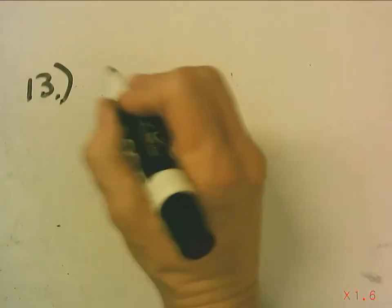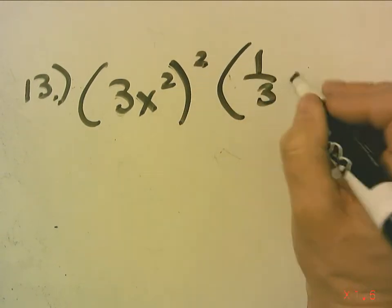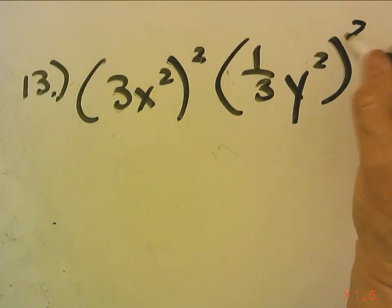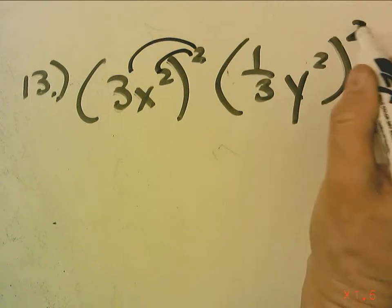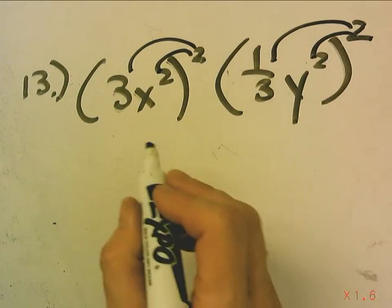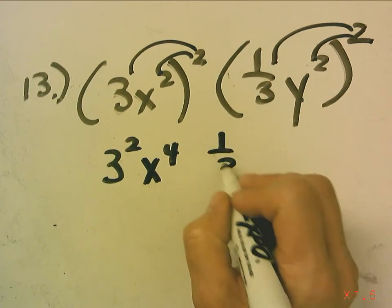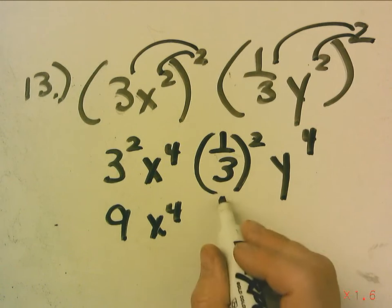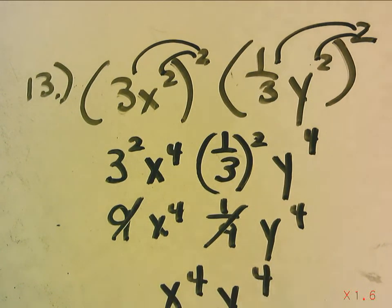Number 13 is a bit of a challenge problem: 3x squared, squared, times one-third y squared, squared. First I have to do power of a product, raising each factor to the second power: 3 squared, x to the fourth, times one-third squared, y to the fourth. This becomes 9x to the fourth times one-ninth y to the fourth. 9 times one-ninth is 1, so my final answer is x to the fourth, y to the fourth.